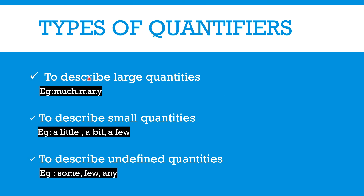There are types of quantifiers to quantify large number quantities, small quantities, and also indefinite quantities — where we don't know what quantity it is and which cannot be counted.